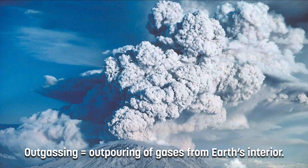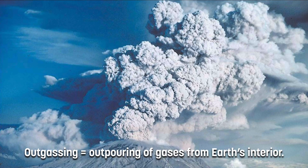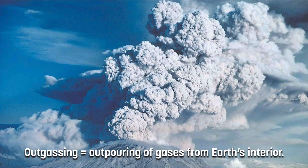Earth's second atmosphere was the result of outgassing from volcanic eruptions. As volcanic eruptions took place, water vapor, carbon dioxide, and nitrogen all got released into the atmosphere. Scientists actually study volcanic eruptions today to learn more about how they had a hand in forming Earth's second atmosphere. This is that same process from the law of uniformitarianism — that anything that happens today probably happened the same way in the past.